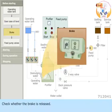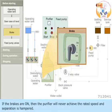Check whether the brake is released. If the brakes are on, then the purifier will never achieve the rated speed and separation is hampered.